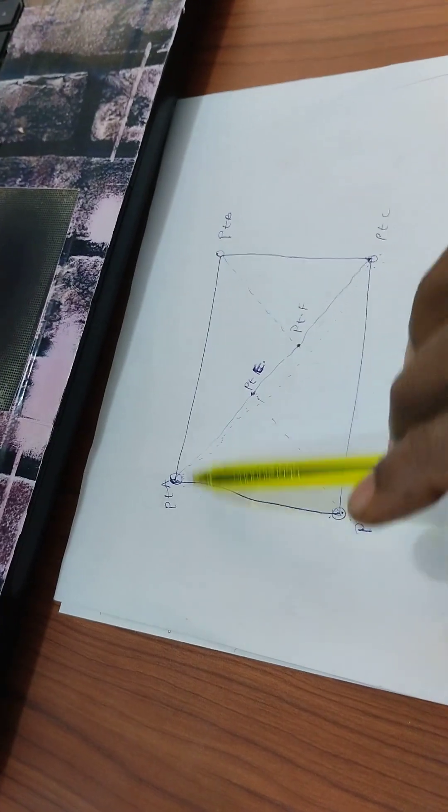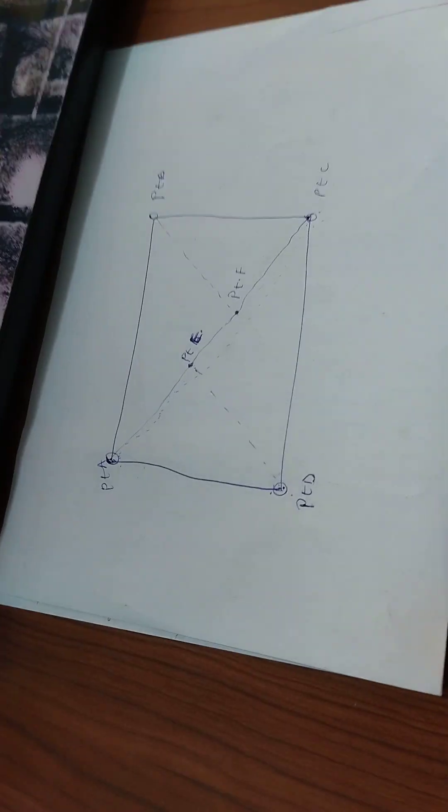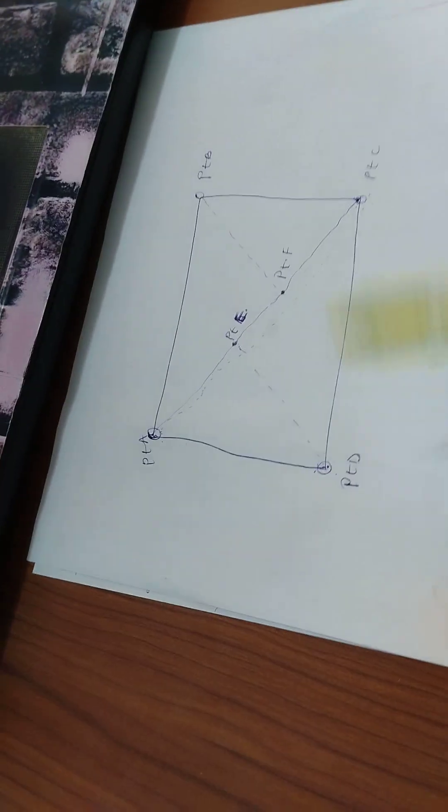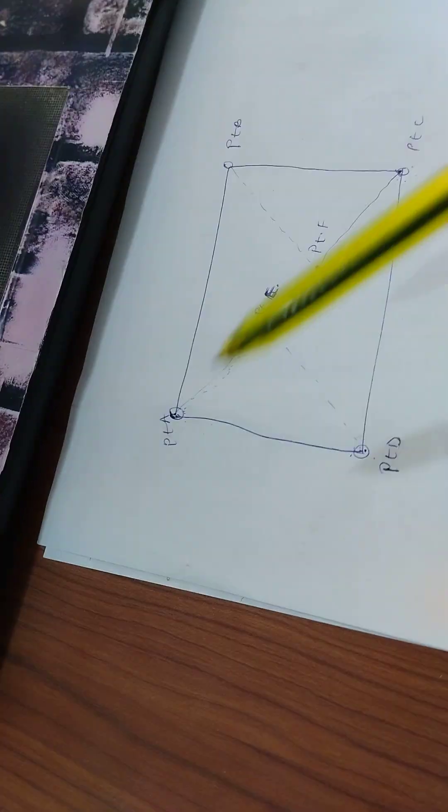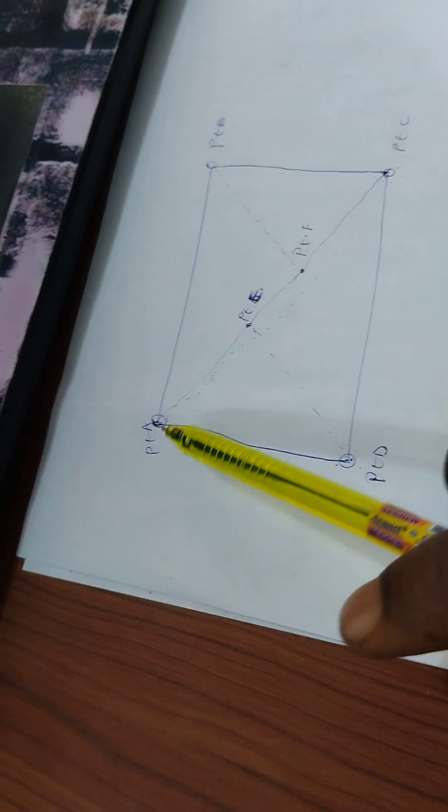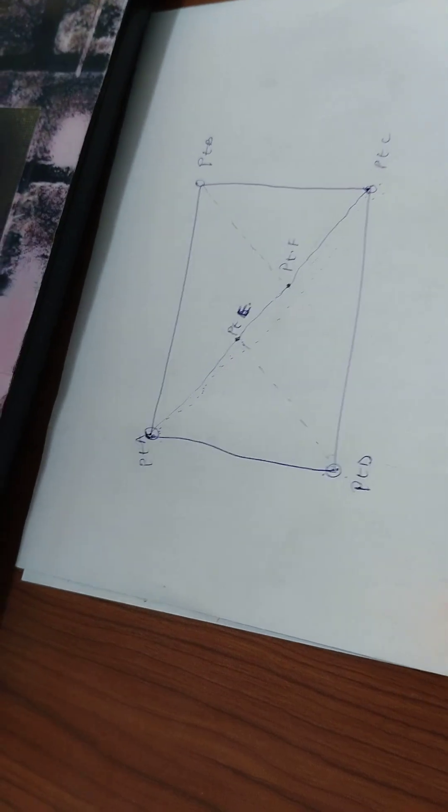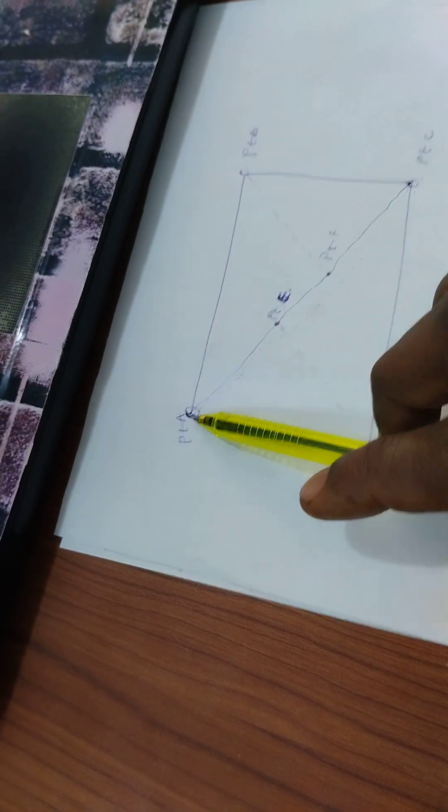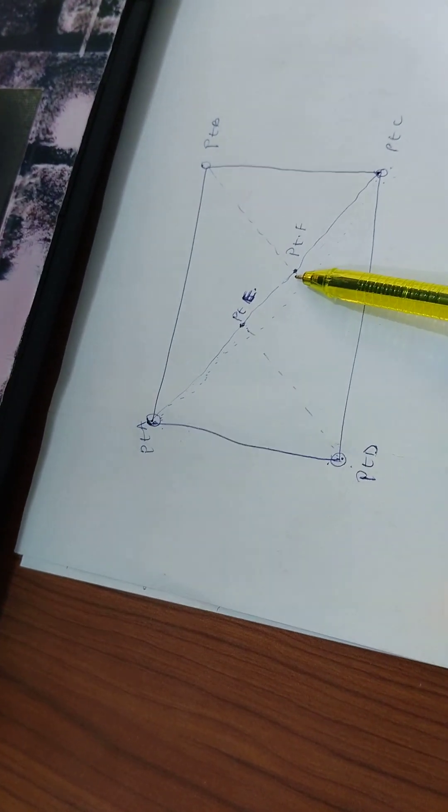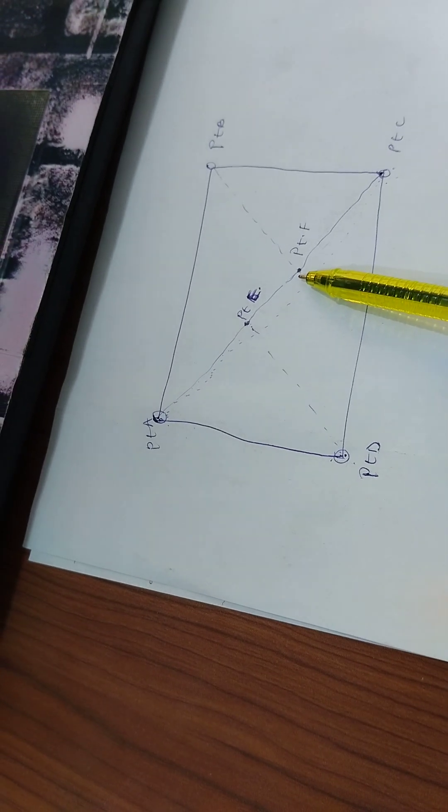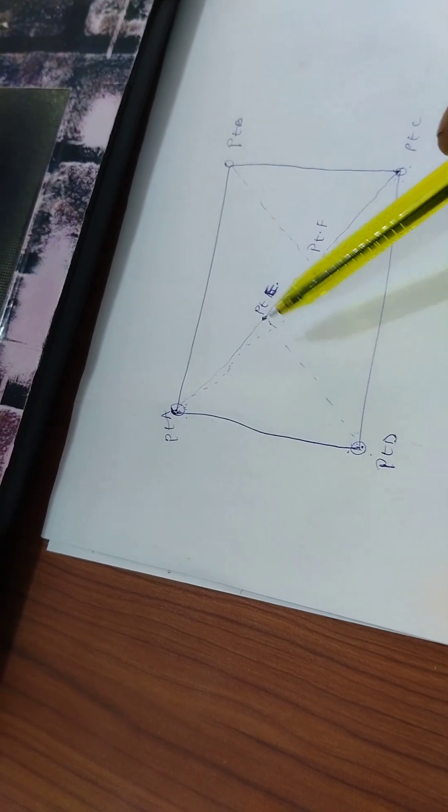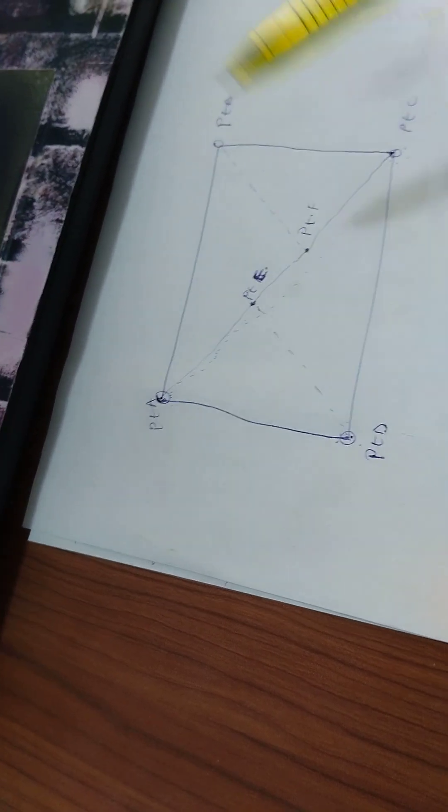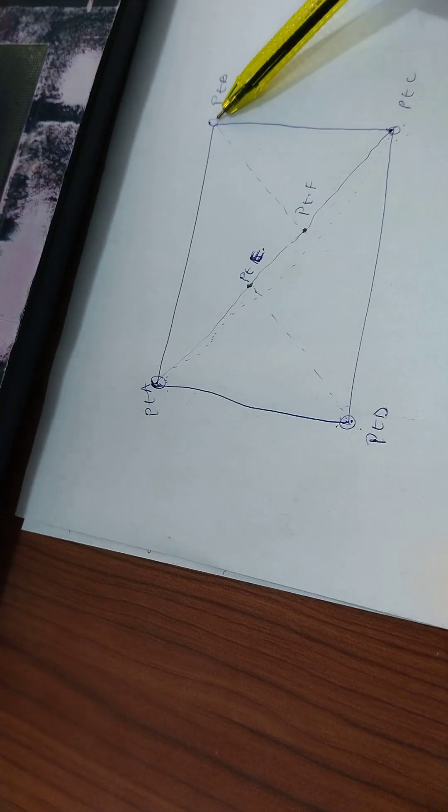For instance, A to B will be on one page. B to C will be on another page. C to D will be on another page. D to A will be on another page. A to C will be on a separate page. A to E will be on another page of the fieldbook. Then A to F will be on another page of the fieldbook. Also, E to D will be on another page of the fieldbook. F to B will be on another page of the fieldbook.